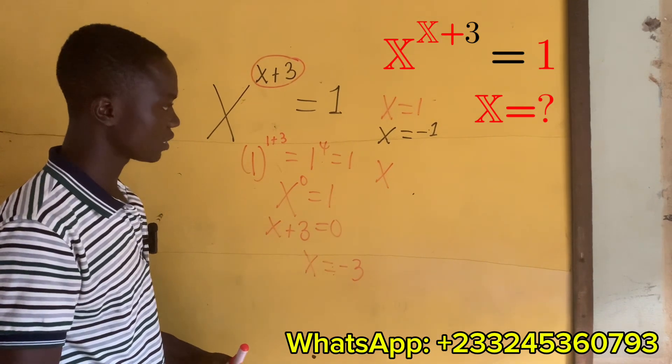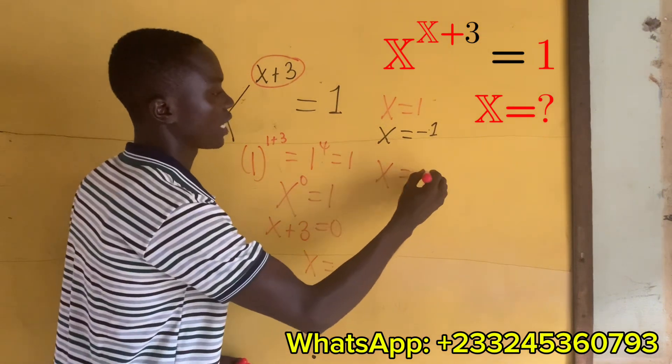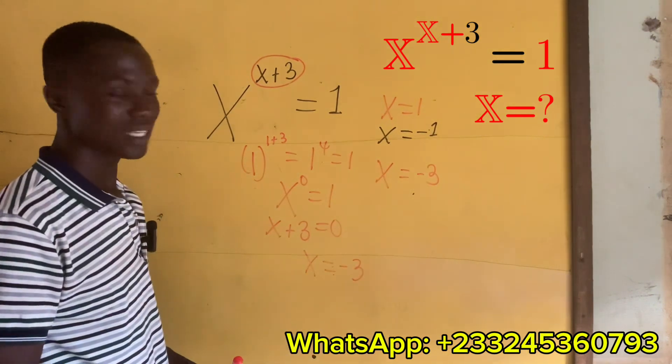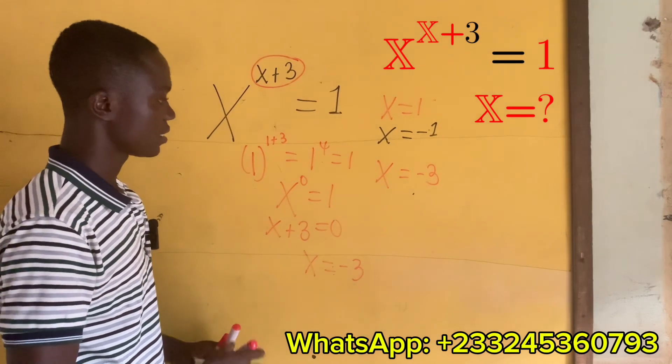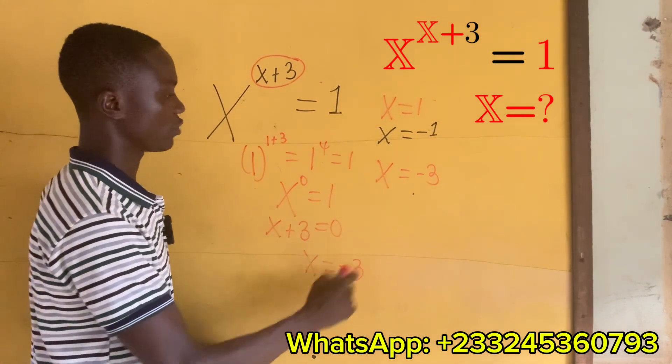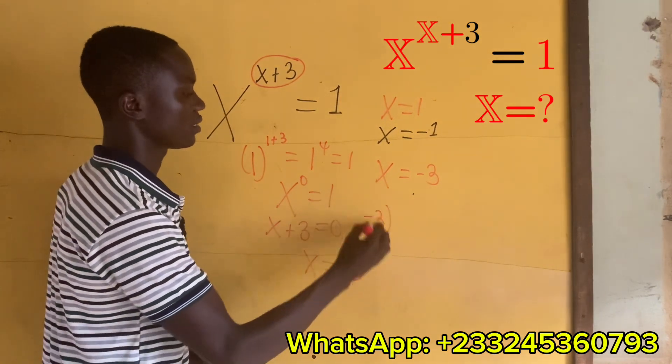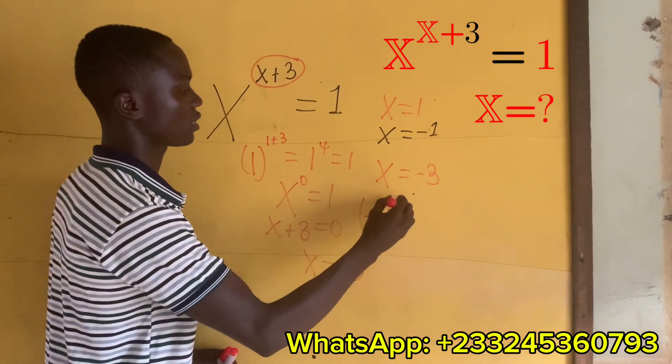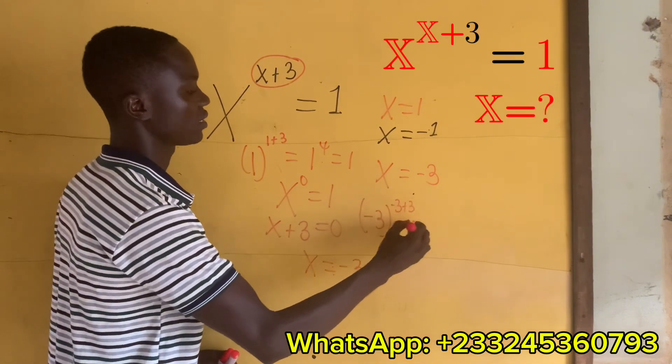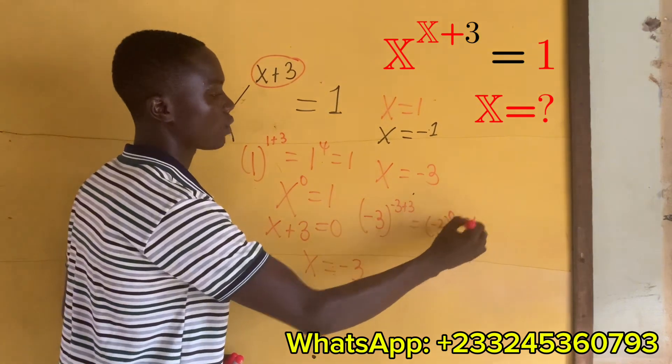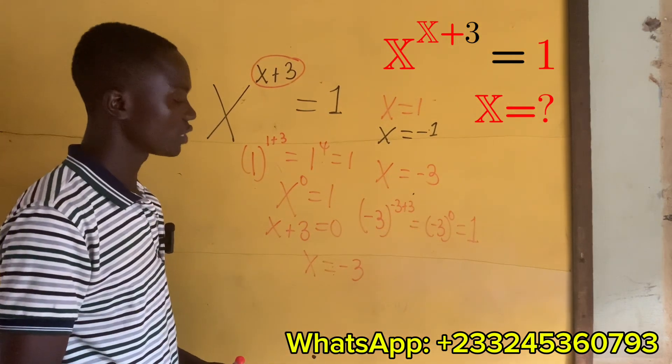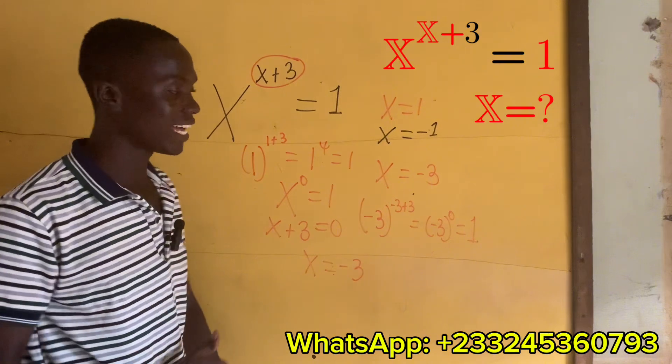We have x equals minus 3. Let's test this and see. If we put x equal minus 3, we have minus 3 exponent minus 3 plus 3, and that will give us minus 3 power 0, which is 1. So these are the possible values that we have: x equals minus 3, x equals negative 1, and x equals 1.